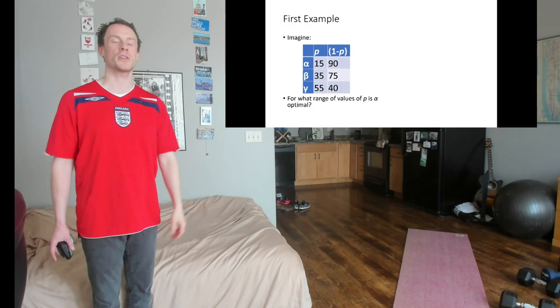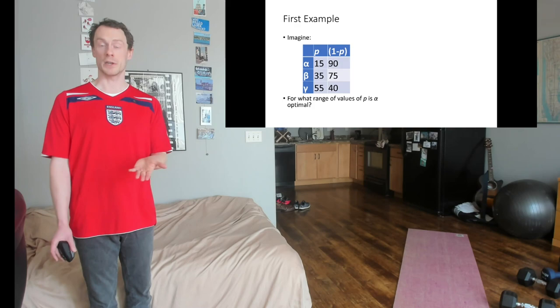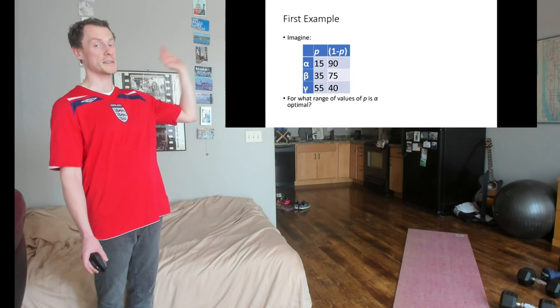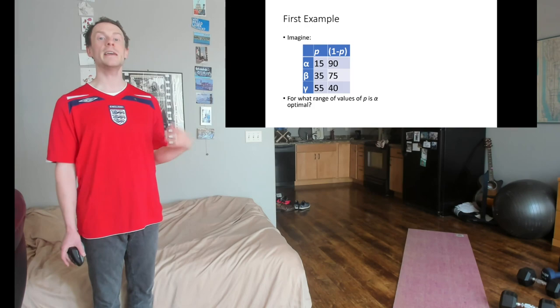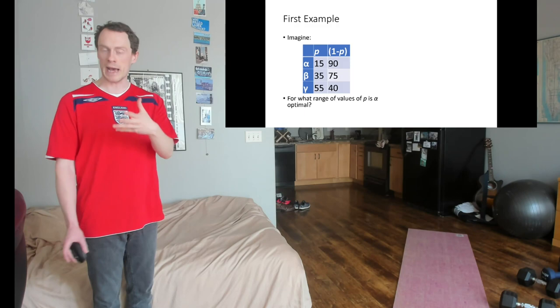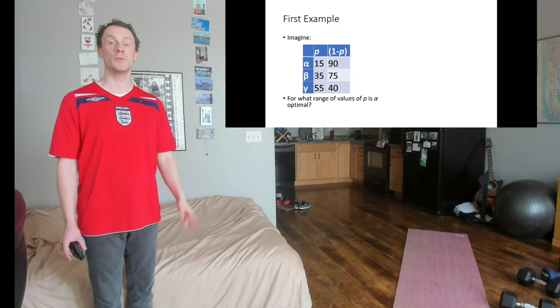We've got three different lotteries. The first one gives us a really low payoff with probability P and a really high payoff with the inverse of P. Beta is a bit more balanced. It gives us a slightly higher payoff for P and a slightly lower payoff for 1 minus P and gamma is the most balanced of all. It actually gives us a higher payoff with probability P and a lower payoff with probability 1 minus P. And the question we're facing is, for what range of values of P is alpha optimal?